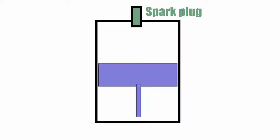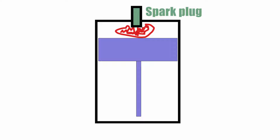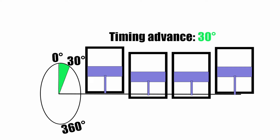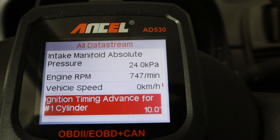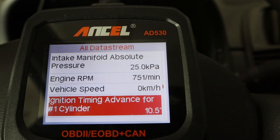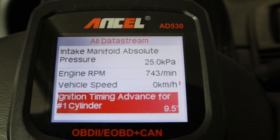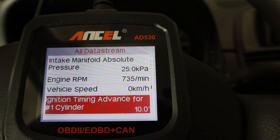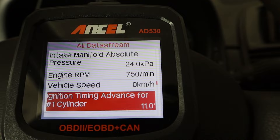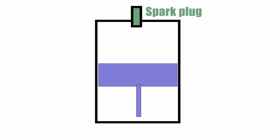Now we have ignition timing advance. Your spark plugs will usually fire before your piston reaches the top of your cylinder. Your pistons are connected to the crankshaft which is rotating. When you see 10 degrees of timing advance, that means the crankshaft needs 10 more degrees of rotation for the piston to reach the top of the cylinder. If you see zero, the spark plug is firing exactly when the piston reaches the top. If you see a negative value, that would be timing retardation — meaning the spark plug is firing late, when the piston is already going down.